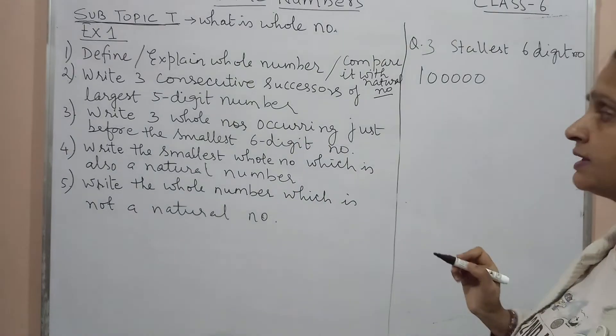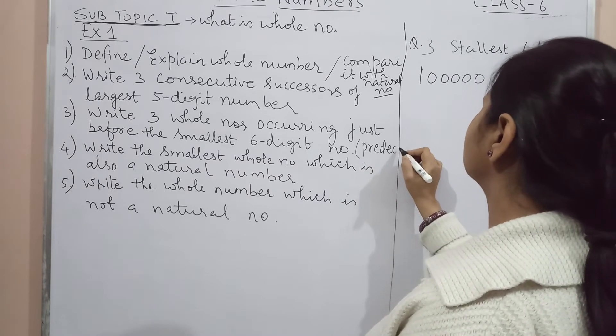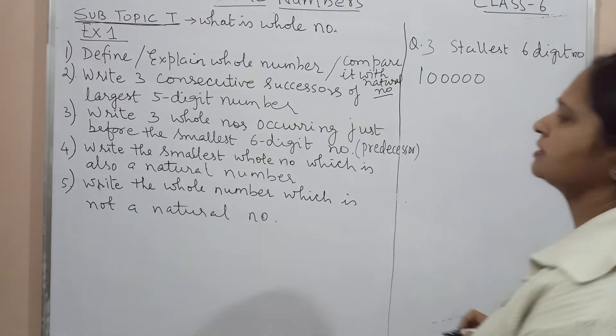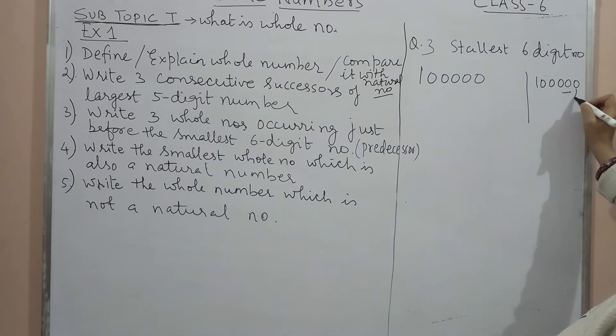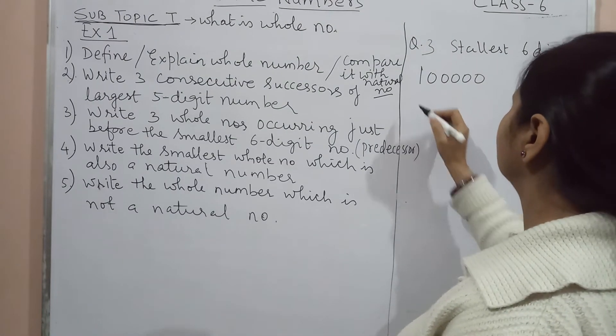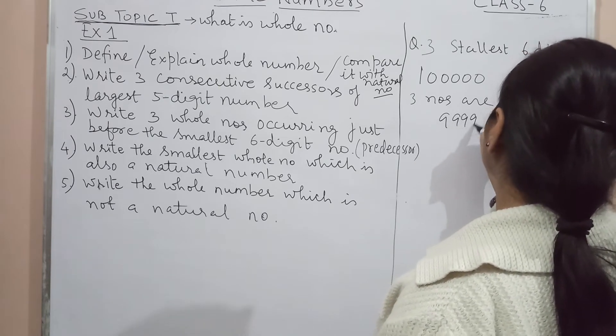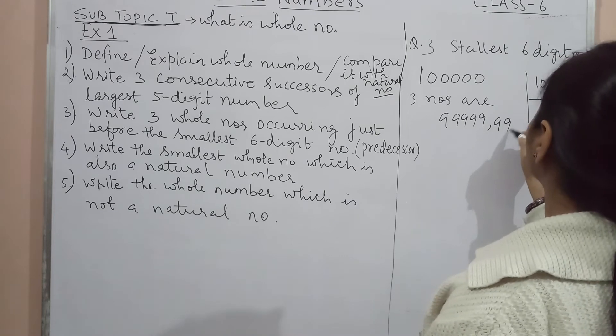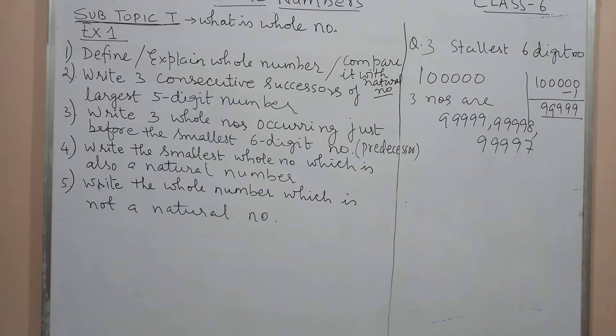Toh ek kam kaise nikalte, we will subtract, we will get 9 here, 9, 9, 9, and 9. So we are going to get, therefore the 3 numbers are: pehla number 99999, usse bhi or kam 99998, or usse bhi kam 99997. So these are 3 whole numbers occurring just before the smallest 6-digit number.